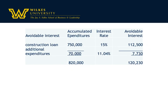Before we go on, one important point: if by chance the construction loan was for more than the accumulated expenditures — let's say $850,000 — I would not have anything in the additional loan expenditures. My avoidable interest wouldn't be based on $850,000; it would be the $820,000, the lesser of the expenditures or the construction loan. That's just in case you face a problem that looks like that.